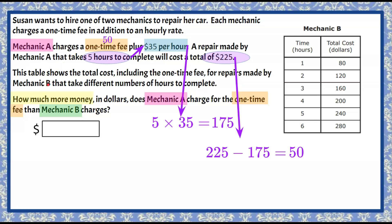Now let's look at Mechanic B. Mechanic B is shown in the table. We can see that for one hour of work, the customer had to pay a total cost of $80. This includes the one-time fee and one hour of work. As we increase by an hour — going from one hour to two hours of work — we go from $80 to $120, which is an increase of $40.